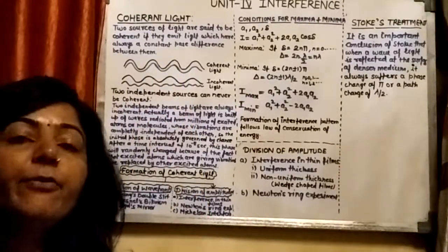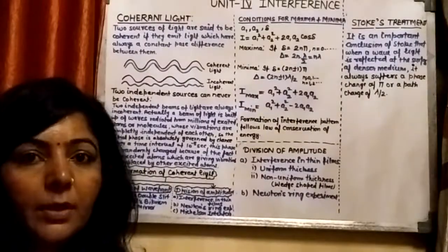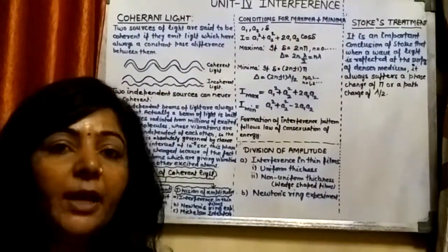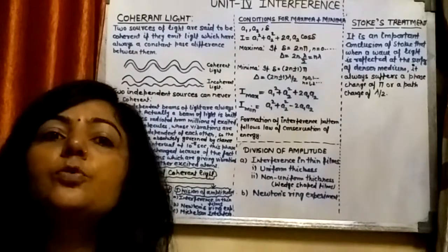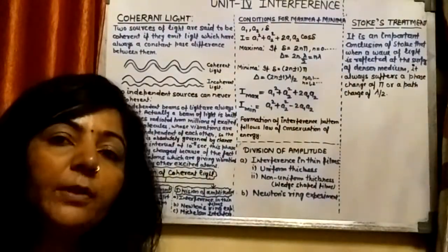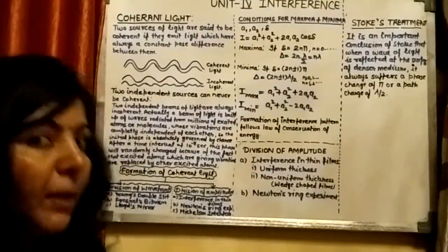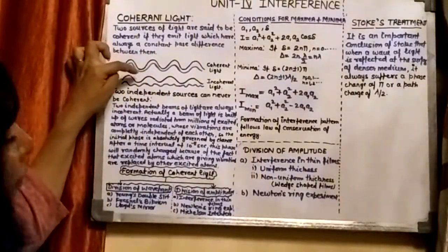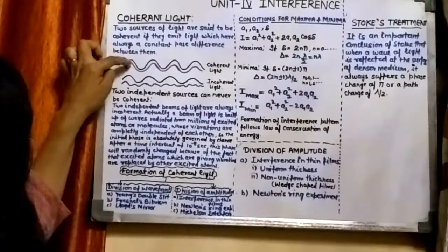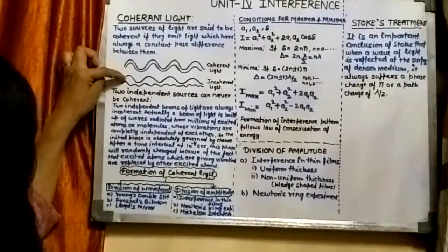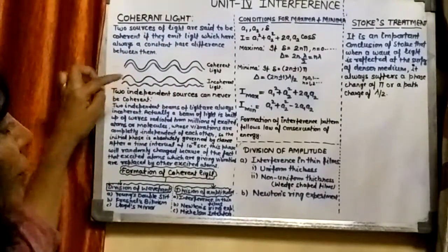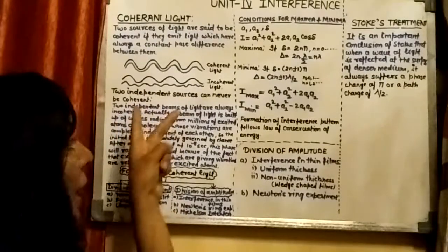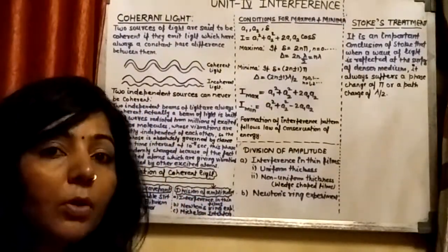In order to get interference, the main condition is that we should have a coherent source of light, and first we have to understand what is the meaning of coherent source. Two light rays coming from a source are said to be coherent in nature if they can maintain a zero phase difference or constant phase difference — or in simple words, if these two light radiations maintain crest-to-crest or trough-to-trough correspondence. If there is no crest-to-crest or trough-to-trough correspondence, then this type of light is known as incoherent.